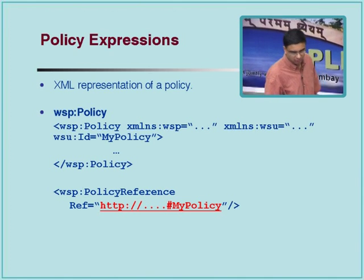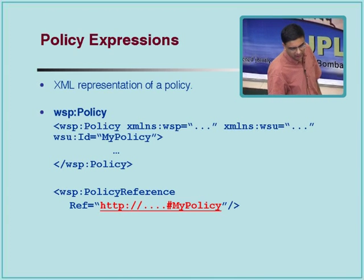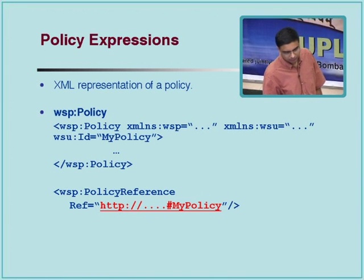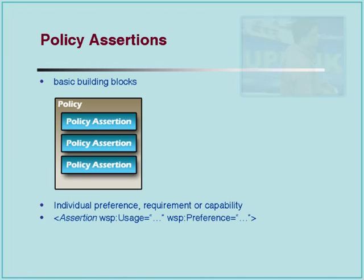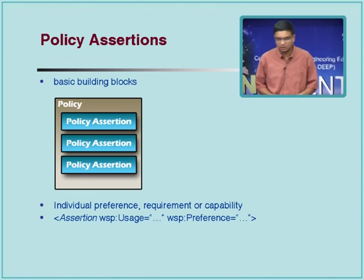There is a WSDL policy with some namespace, and this is a description of a policy that you can reference from wherever. In the case of UDDI, you can express the policy as a T-model and store it within UDDI, then refer to it even through categorization. You can say one of the categories is this policy T-model that you conform with when you express a service.